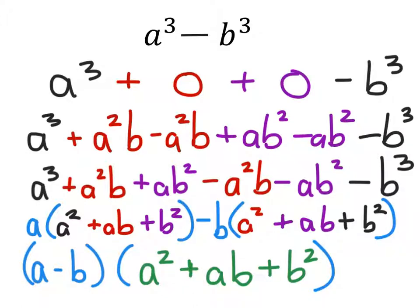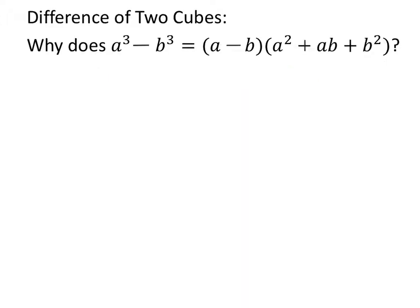So this is how it's proven, this is how it's derived, however you want to say it. But that solves the problem right there, why a cubed minus b cubed equals all of this other stuff there.